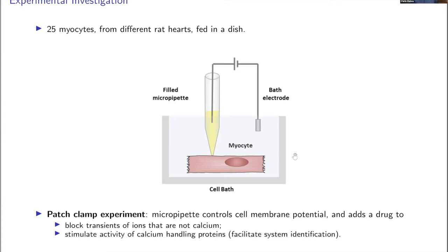We measure calcium as a proxy for what these cells are doing, and through that proxy measurement we'll be able to say something about cell-to-cell variability. If we take 25 cells, expose them to the same electrical and chemical stimuli and observe completely different calcium responses, that speaks to the potential heterogeneity in some aspect of the cellular signaling system. That's what we want to explore.